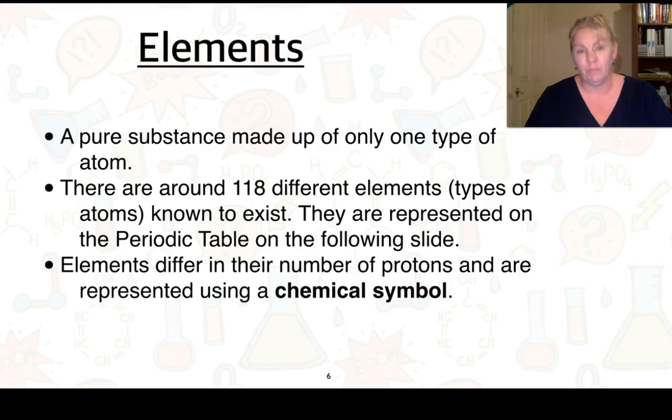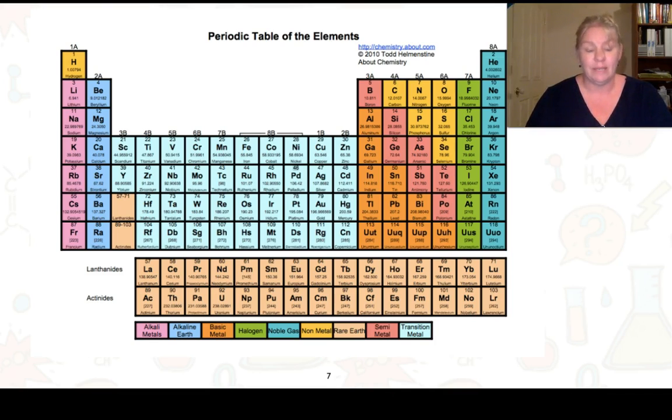And it's that number of protons which we can then use to produce this periodic table. So here we have elements that range from hydrogen, helium, lithium, beryllium. You probably had to learn the first 20 off by heart last year.